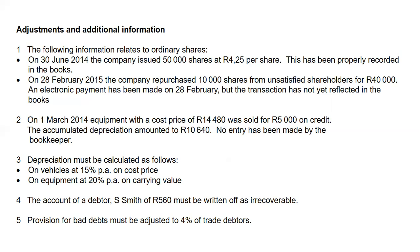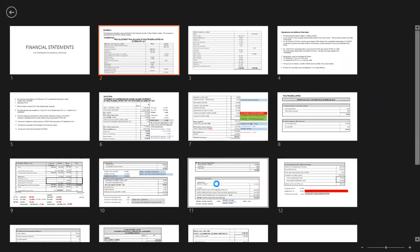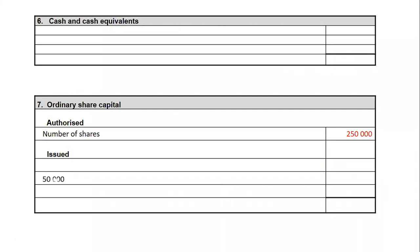The adjustment states this has been properly recorded in the books. That means when you look at the pre-adjustment trial balance, ordinary share capital shows 190,000 shares with a value of $807,500. This means 190,000 shares already includes the newly issued shares, and the $807,500 includes the share capital received. I go to my ordinary share capital note and begin recording the 50,000 shares — because 190,000 includes those 50,000 shares.